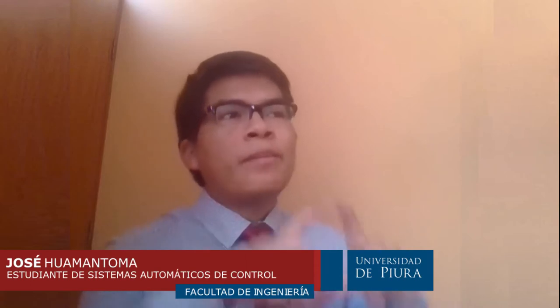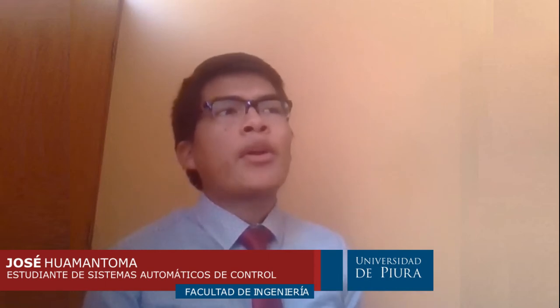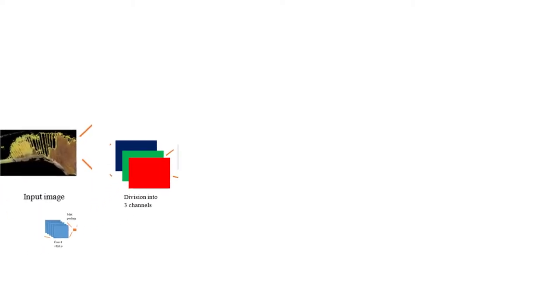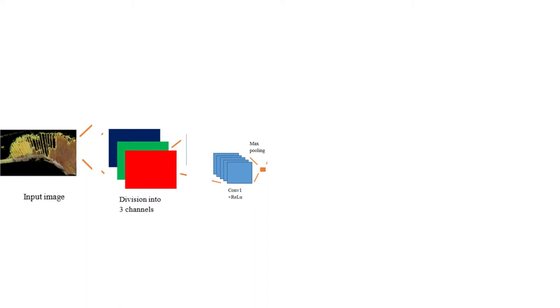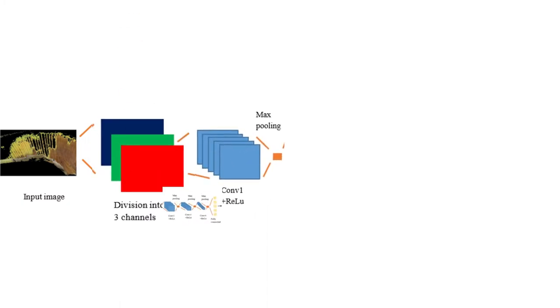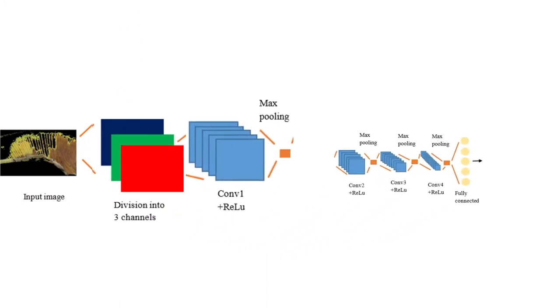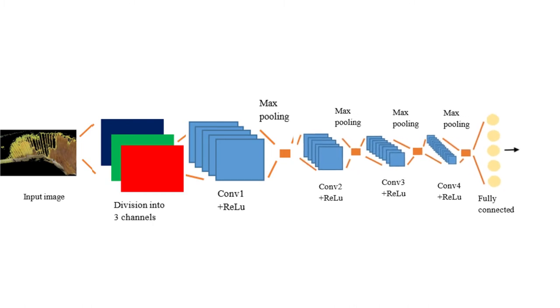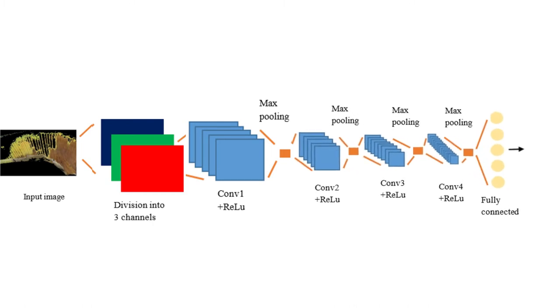The idea of a convolutional neural network is to pass a set of filters to an input image, such that those filters detect local patterns that allow the creation of a model. First, the neural network divides the input image into three channels: red, green, and blue. It has four convolutions, and after each convolution there is an activation function ReLU and max pooling, which allow extracting the most important features.